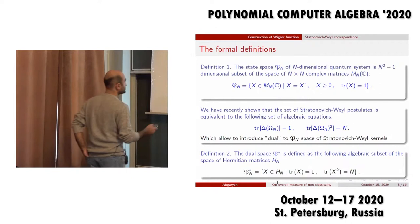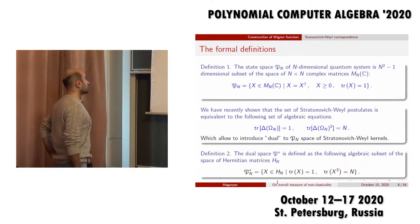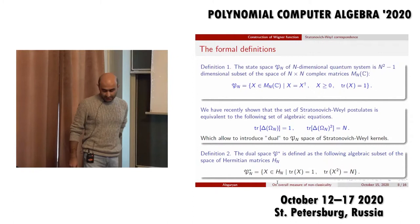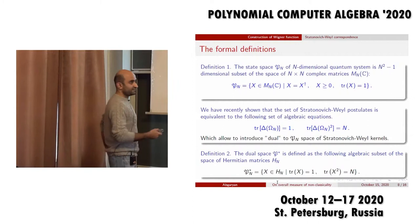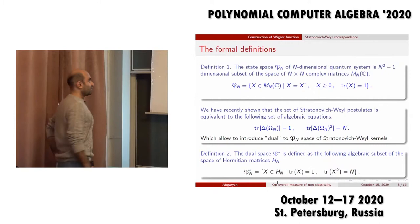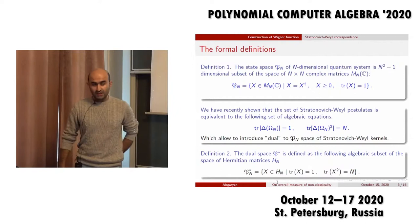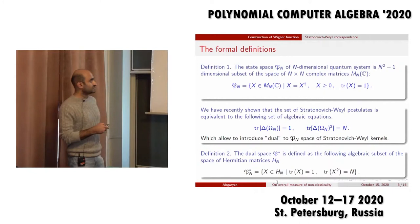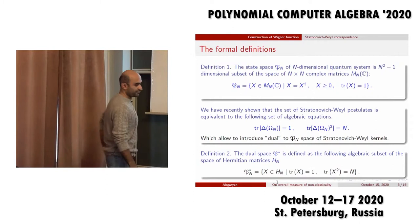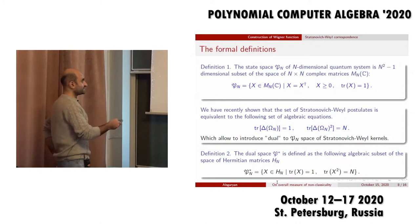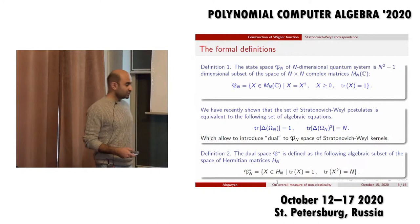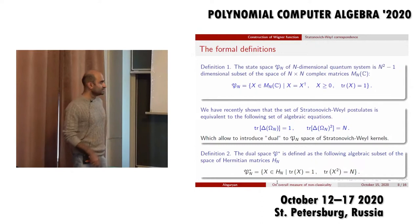First, we start with the definition of the state space. The state space for n-level quantum systems is the space of complex n×n matrices which are Hermitian, positive semi-definite, and of trace 1. We have shown in one of our works that all of the Stratonovich-Weil postulates are mathematically equivalent to two simple algebraic equations: the trace of the Stratonovich-Weil kernel has to be 1, and the trace of its square has to equal n, the dimension of your matrices. The second object in our paradigm is the space of Stratonovich-Weil kernels: Hermitian n×n matrices of trace 1 and square trace equal to n.